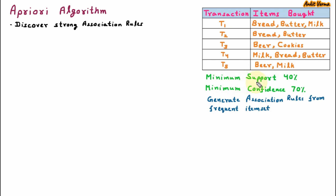Here minimum support is given as 40% and minimum confidence is given as 70%. From this dataset, we are going to generate association rules from frequent item sets. It means we are going to find out the items which are frequently bought, and from these items we will generate association rules. Out of all these items which are bought, we are going to find the unique items.